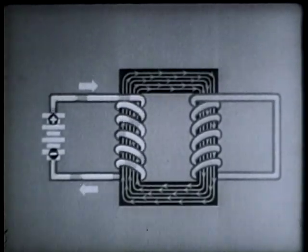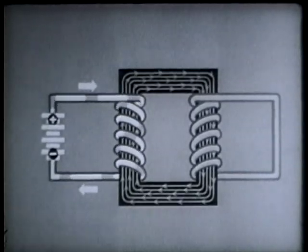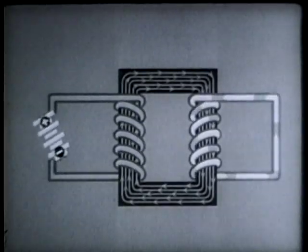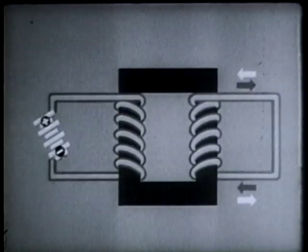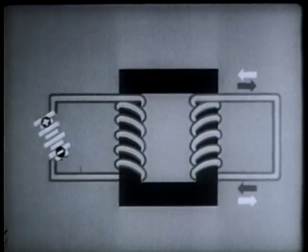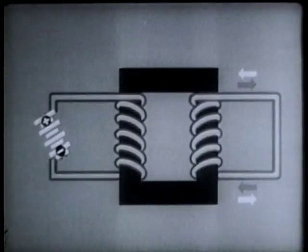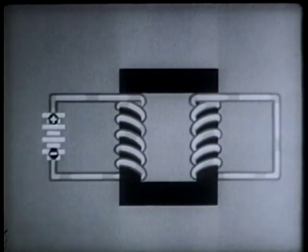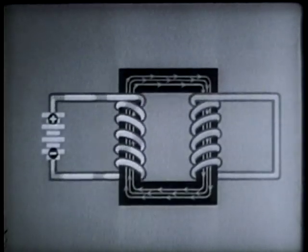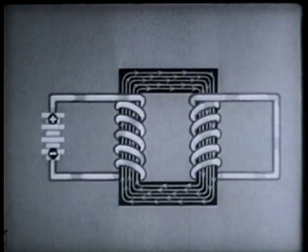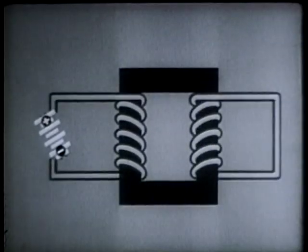Watch what happens when the current supply is cut off. As the magnetic flux dies, current again flows for an instant in the second winding, this time in the opposite direction. This then is the first important fact about a repeating coil: it blocks direct current except at the instances when the current is changing.